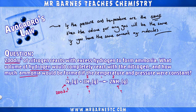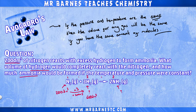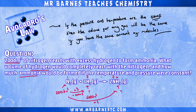If I want to work out how much hydrogen I've got, I look at that ratio and multiply by 3 — I've got a ratio of 1 to 3, so 200 times 3 gives me 600cm³ of hydrogen. Then if I want to work out how much ammonia I've got, I've got a ratio of 1 to 2 between nitrogen and ammonia, so 200 times 2 gives me 400cm³ of ammonia.